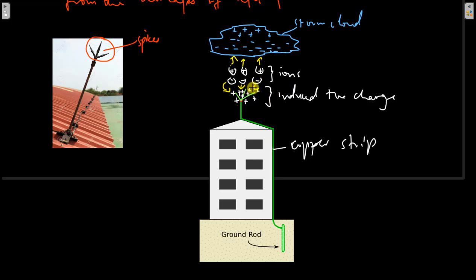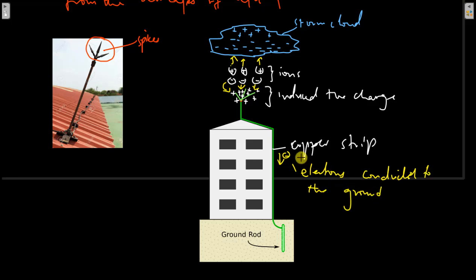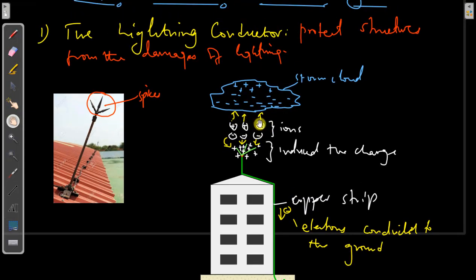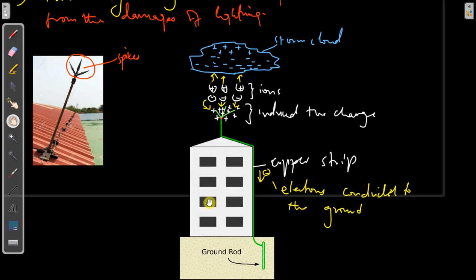Meanwhile, the electrons that have been attracted to the sharp spikes will be conducted to the ground. Virtually, the negative charge that was originally on the storm cloud has been conducted to the ground safely. The ground has an immense amount of charge capacity because the earth is at zero potential, so it can take up or give any amount of charge. So in this case, our thunder cloud is safely discharged and our structure is protected from the danger of lightning.